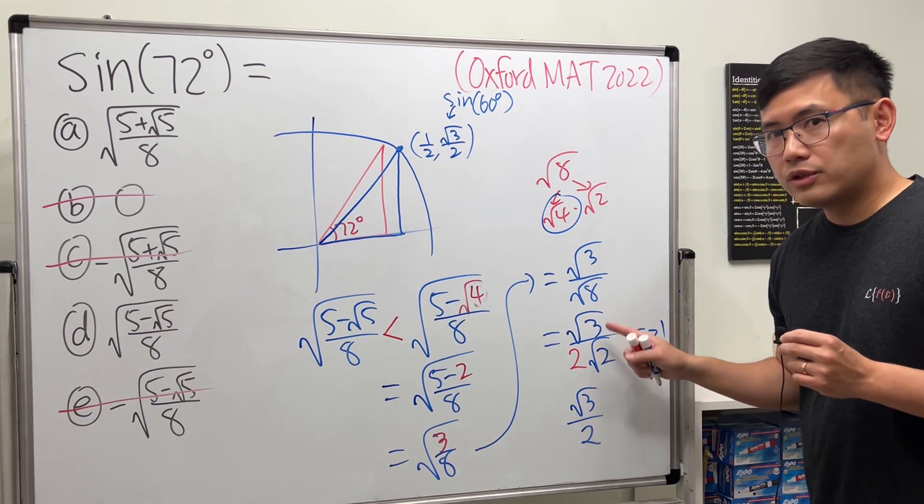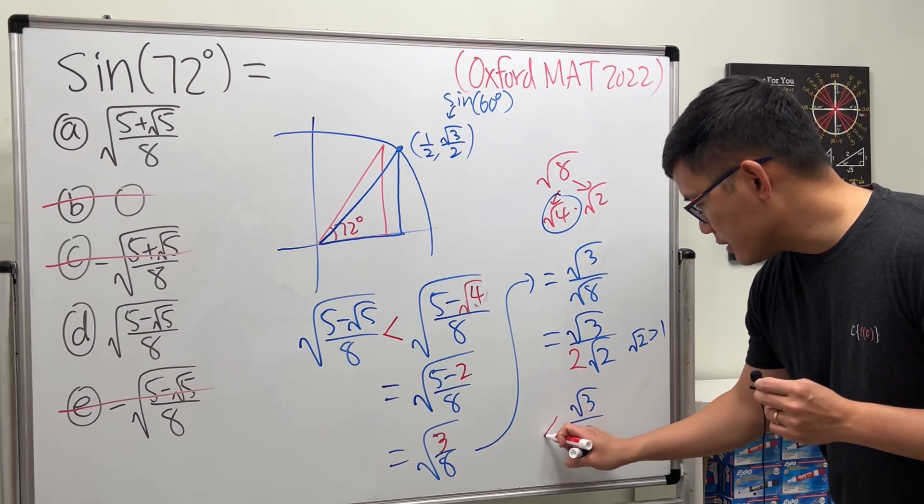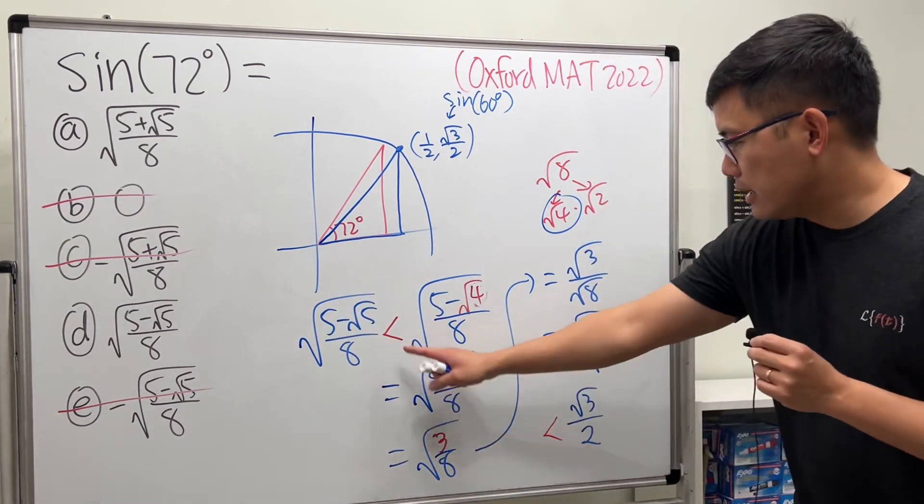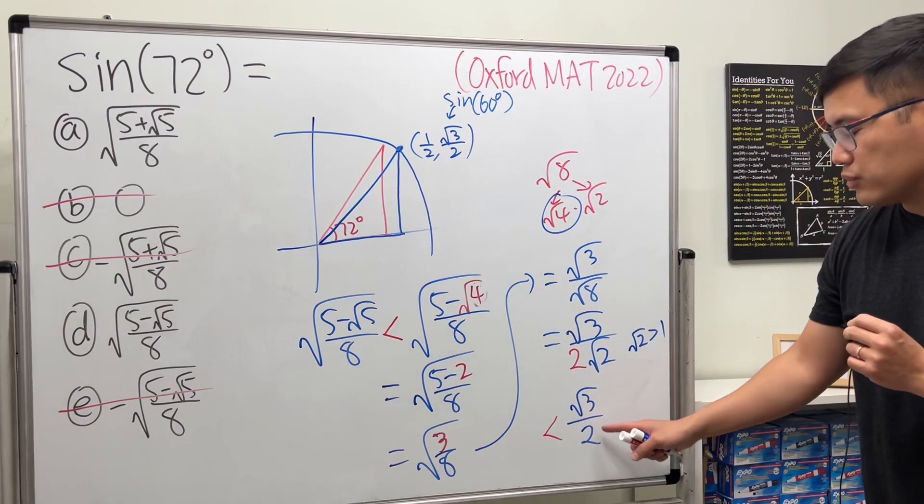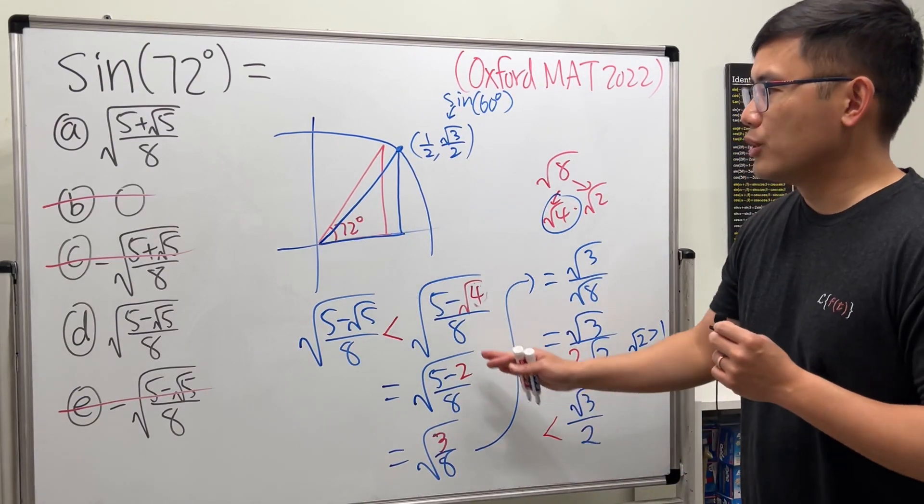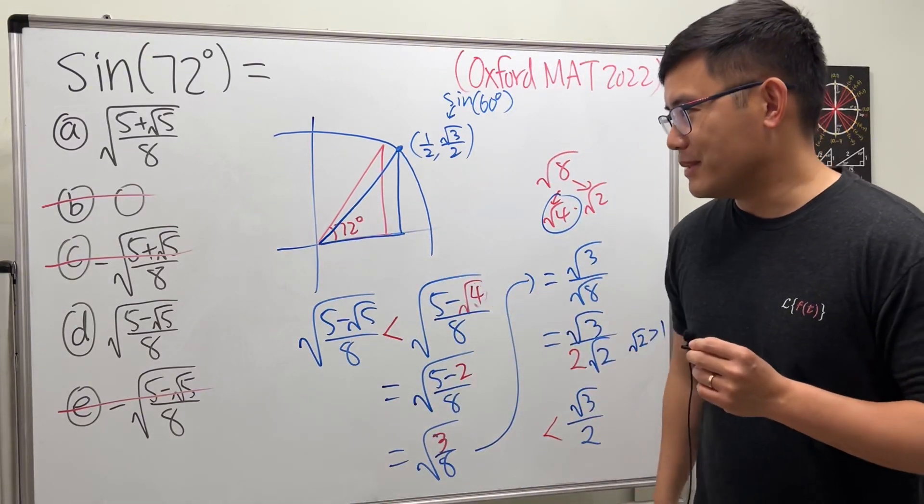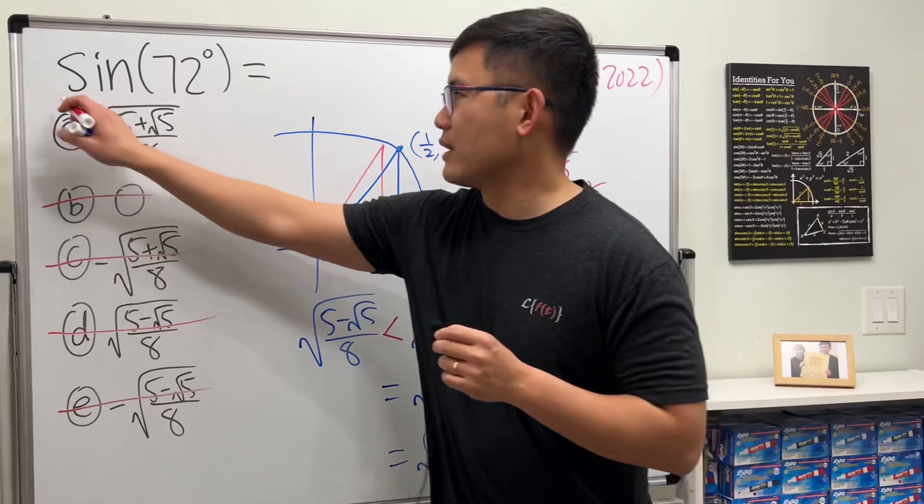So we can replace that with less than. As you can see, this thing is less than √3/2, which is not possible—it is not possible to be sin(72°). Well done.